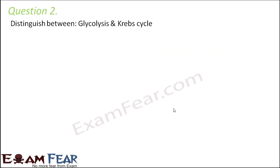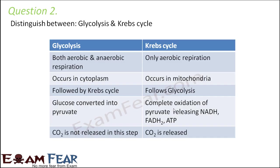Question number two: distinguish between glycolysis and Krebs cycle. Glycolysis is a part of both aerobic and anaerobic respiration, whereas the Krebs cycle is only for aerobic respiration. For anaerobic respiration, the first step is glycolysis because glycolysis does not involve oxygen. But before the Krebs cycle, oxidation of pyruvate has to take place, and that oxidation does not happen in anaerobic respiration — so Krebs cycle is only part of aerobic respiration.